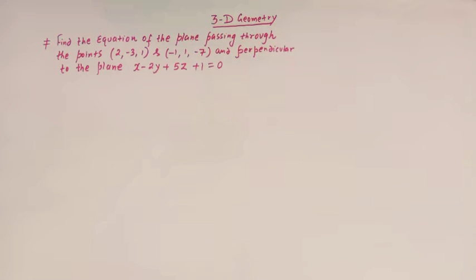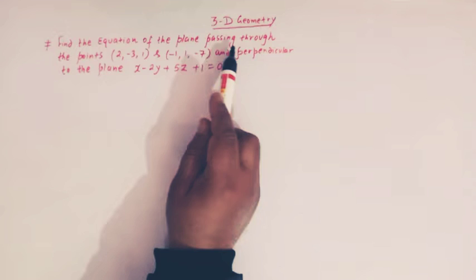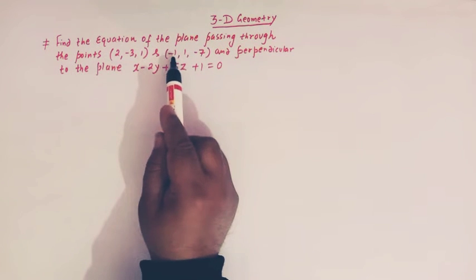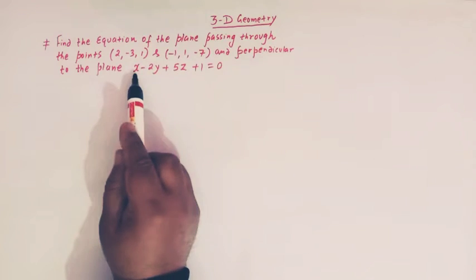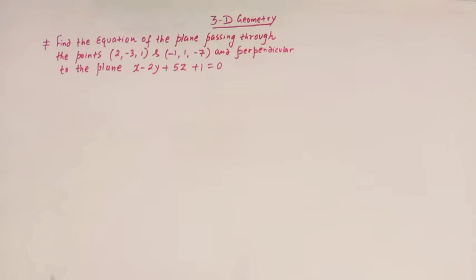Hello viewers. In today's class we are going to discuss one important problem from three-dimensional geometry. The problem is finding the equation of a plane which passes through the points (2, -3, 1) and (-1, 1, -7), and is perpendicular to the given plane x - 2y + 5z + 1 = 0.